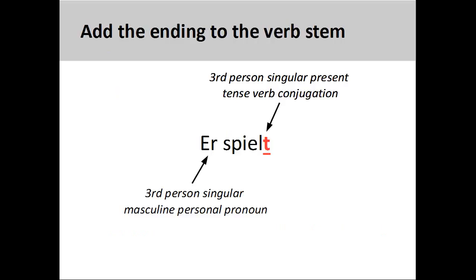Once that is done, we simply add that ending to the verb stem to produce 'er spielt', 'he plays'. Both the subject and verb are in third person singular, creating subject-verb agreement.